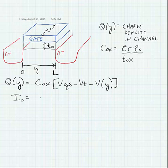And we know that our current is proportional to the amount of charge in the channel. And we have to multiply this by the width of the channel. That's this dimension here. And we multiply that by the velocity in the channel.